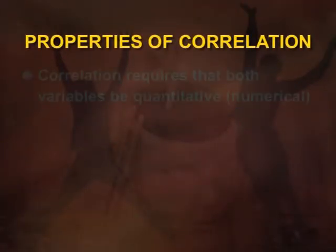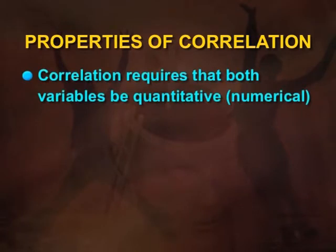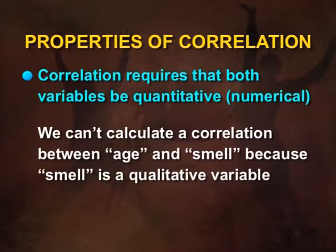As we can see from the slides, properties of correlation: correlation requires that both variables be quantitative, meaning they have to be numerical. We cannot calculate a correlation between age and smell, because smell is a qualitative variable.